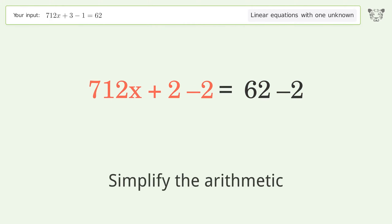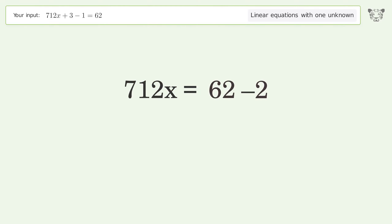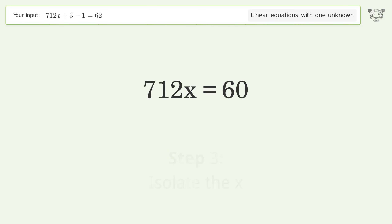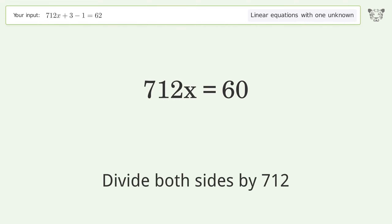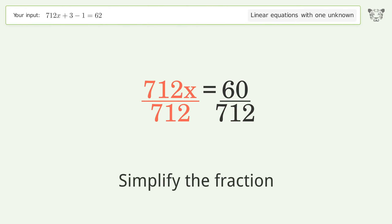Simplify the arithmetic. To isolate x, divide both sides by 712, then simplify the fraction.